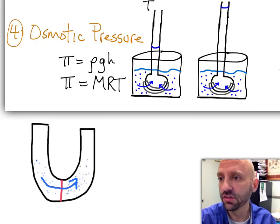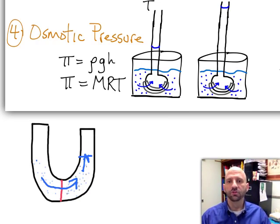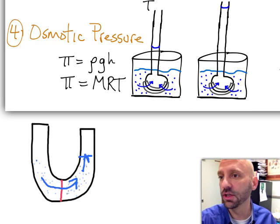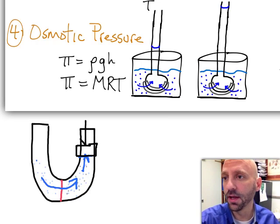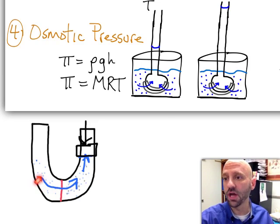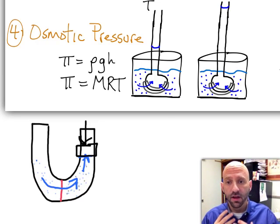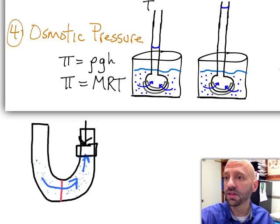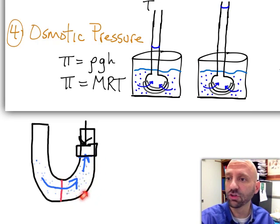And that's going to cause the level here to go up. So we actually then can measure the osmotic pressure by essentially putting a cap over this side of the U-tube and applying pressure until the flow down here stops. And that pressure is going to be directly related to the concentration of the solution over here.